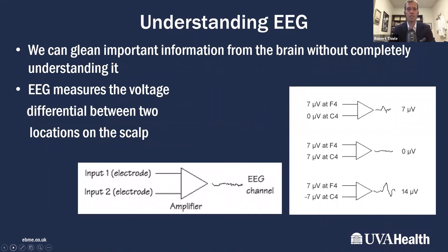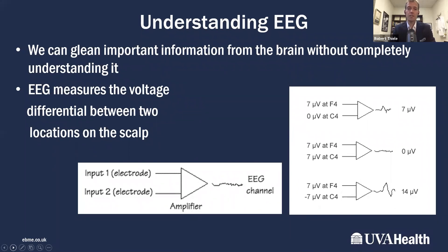This is where electroencephalography comes in. The idea is that we can get important physiologic information from the brain without completely understanding it. EEG is analogous to EKG — it measures voltage differences between two different points on the scalp, which gives you information about electrical activity occurring in the brain. The classic example of how EEG can provide useful information even without full understanding is in seizures. Clinical seizures are detectable visually, but 8% of non-responsive ICU patients are having subclinical seizures — seizure activity in the brain that doesn't manifest as any physical movement. That seizure activity is very easy to detect on EEG, and even without understanding the etiology, you can detect somebody having a seizure.